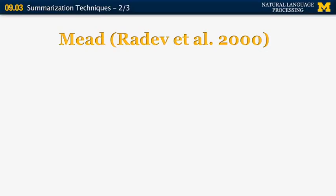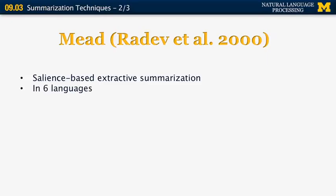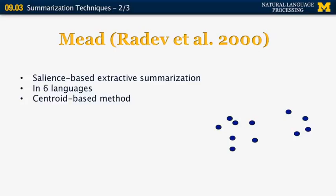Another paper from that time period is MEAD, developed around 2000 — a general-purpose framework for extractive summarization based on salience, specifically the centroid of a collection of sentences. The centroid-based method works by representing sentences from different documents as points in a vector space, clustering them into topics, and identifying red circles representing the centers of mass of individual clusters. From each cluster, you pick the sentences most similar to the centroid, and then — possibly after diversity-based re-ranking using MMR — you pick sentences that are both similar to the centroid and different from one another.